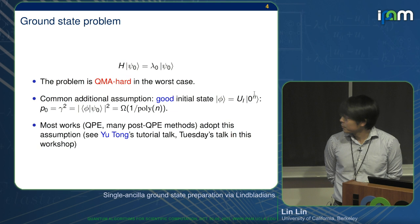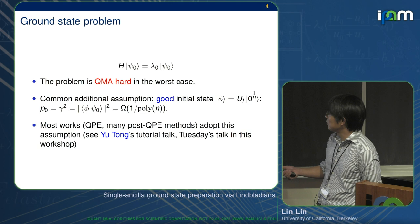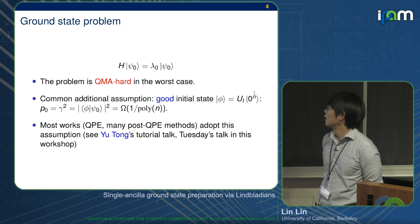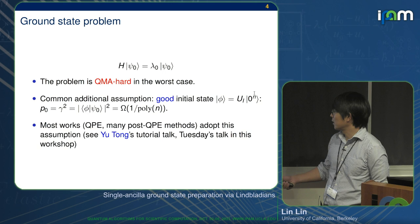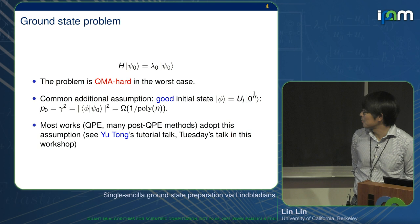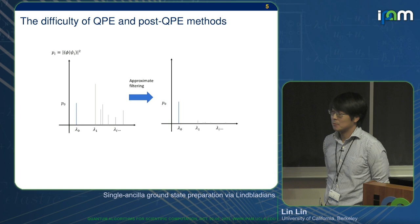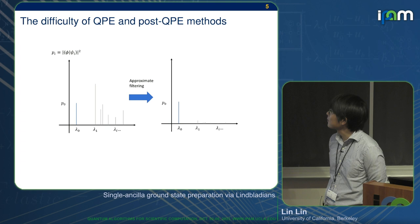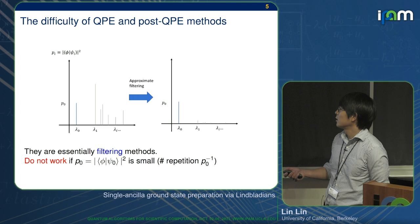P zero, or gamma squared, given by the square of the overlap, is at least one over poly N. It's a very strong assumption — it's not clear at all how you can get there. Without this, you go nowhere, which means that most of the works, including QPE methods, adopted this assumption to get somewhere. It's a good, sufficient condition. On Tuesday we heard a number of speakers — Lexine, Peter, and Jian — talking about this in this workshop.